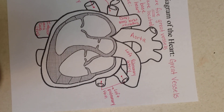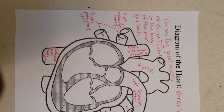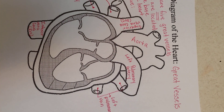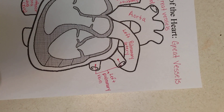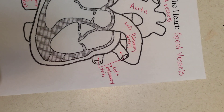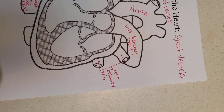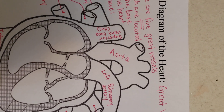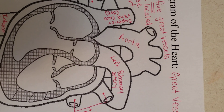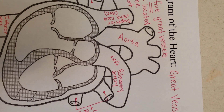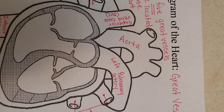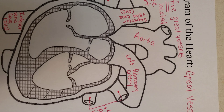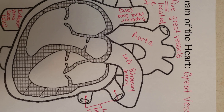Then you have your pulmonary veins. There are four large pulmonary veins that return oxygenated blood from the lungs to the left atrium — they are the only veins within the human body that will carry oxygenated blood. Then you have your aorta. The aorta is the largest artery in the body. It takes oxygenated blood from the left ventricle to the systemic circulation to feed all the organs of the body.